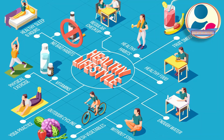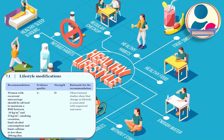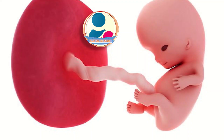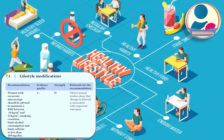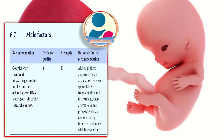The guideline encourages healthy lifestyle modification: women with recurrent miscarriages should maintain a BMI between 19 and 25 kg/m², stop smoking, limit alcohol, and limit caffeine to less than 200 mg per day. Observational studies show lifestyle changes are associated with improved outcomes. Couples with recurrent miscarriages should not be routinely offered sperm DNA testing outside of a research context.